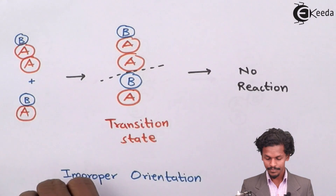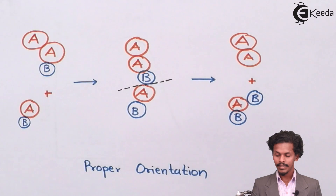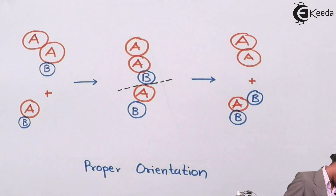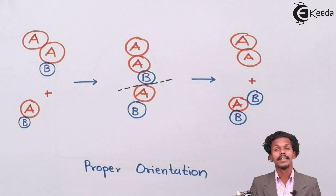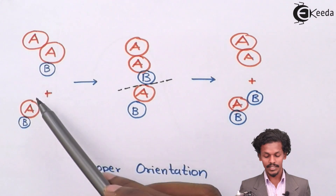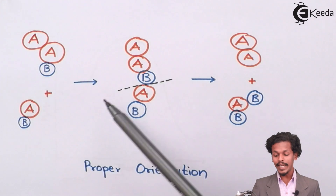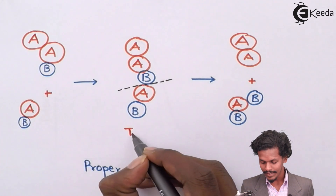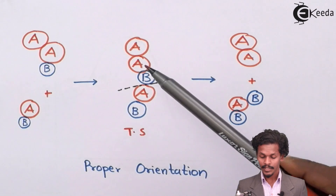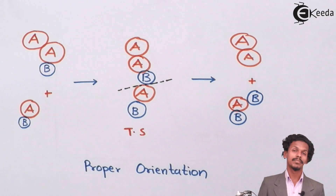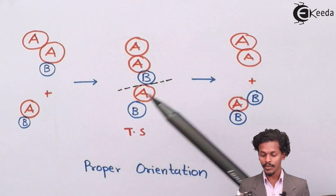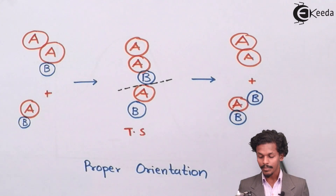In contrast, consider another bimolecular reaction where molecule A-B collides with molecule A-B and forms a transition state (TS). If this is a proper orientation — meaning they are colliding correctly — then only the product A and product B will be formed. So the collision must happen in the proper orientation for the product to be produced.